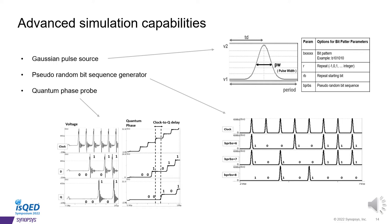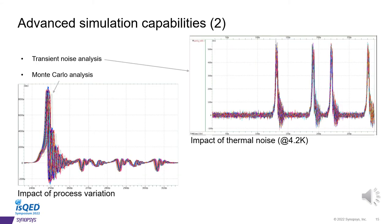For signal probing, we have added the quantum phase probe. This probe will automatically convert the voltage signal into equivalent quantum phase per node. Two important simulation capabilities are analyzing how process variation and thermal noise effect impact circuits and signals.